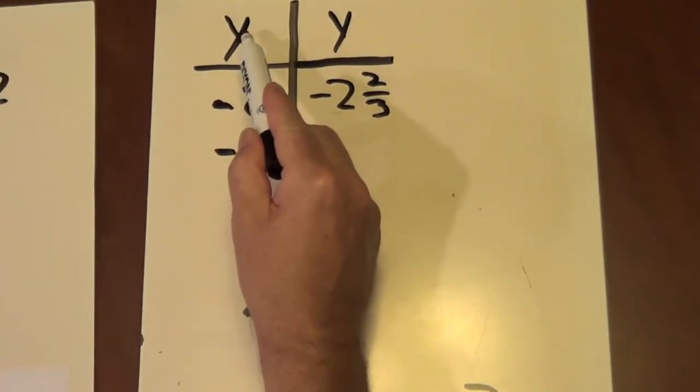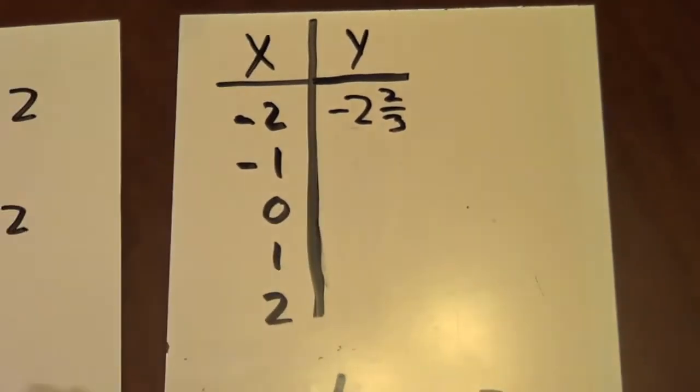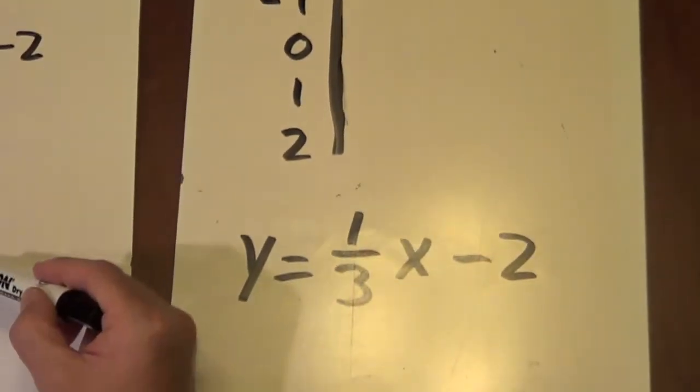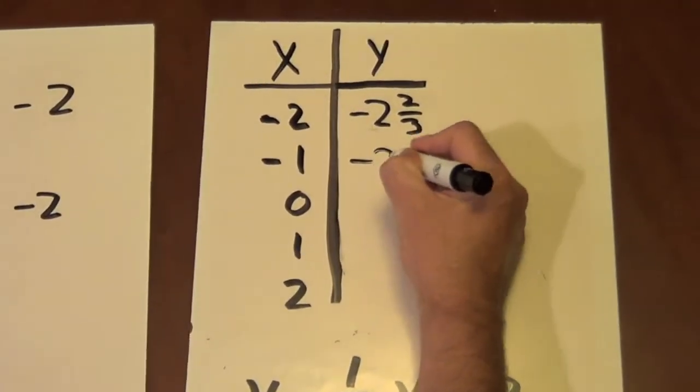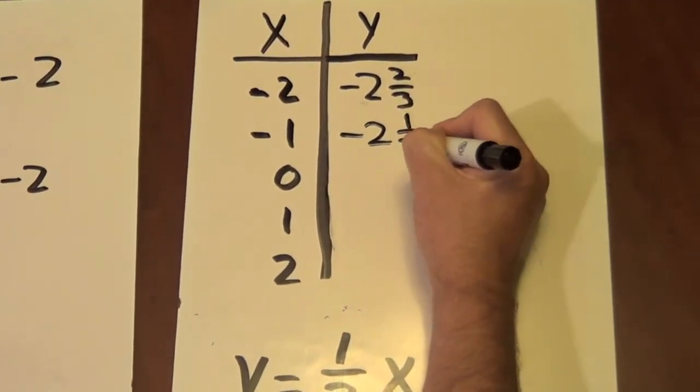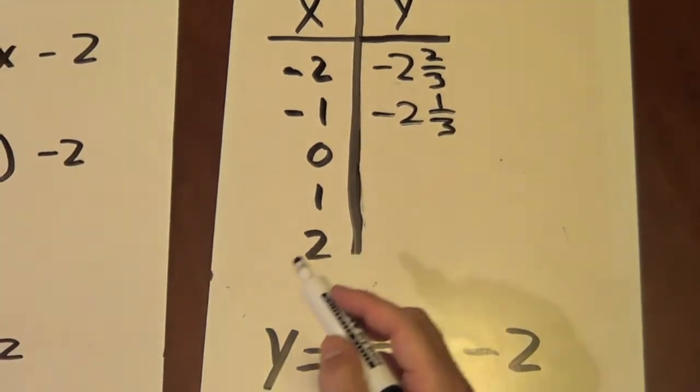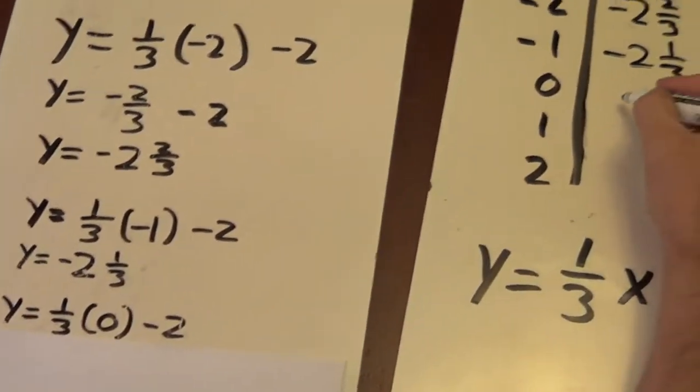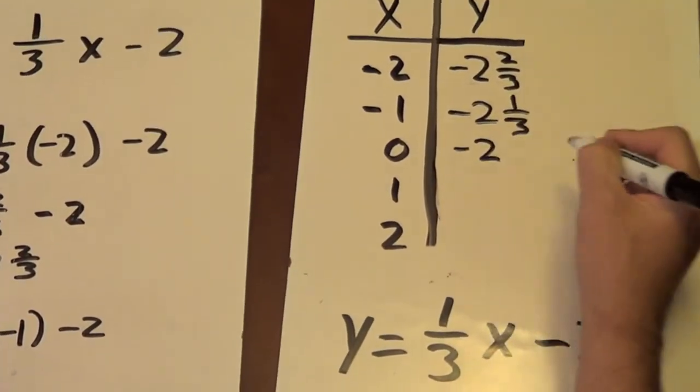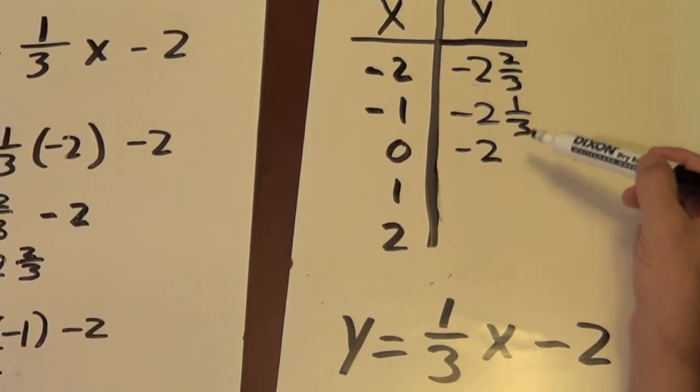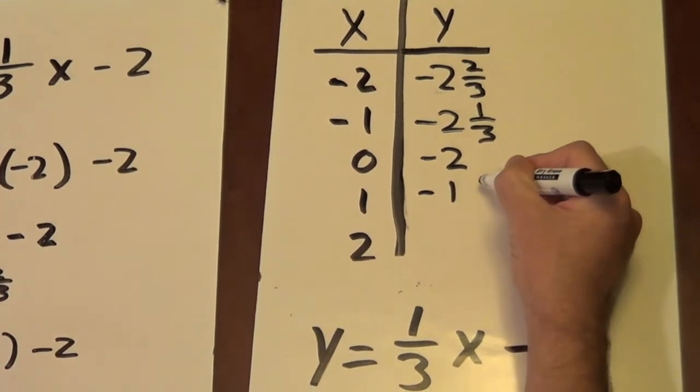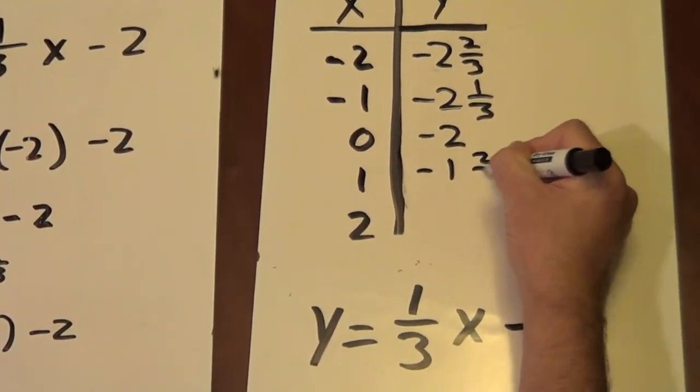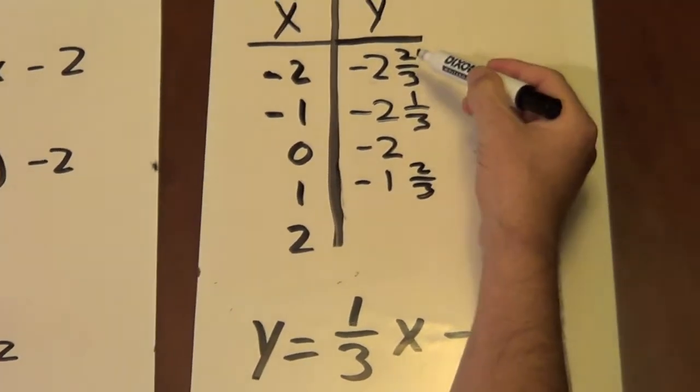Now, I'll substitute negative 1 for x. And when I substitute negative 1 for x, I get y equals negative 2 and 1 third. And when I put 0 in for x, I get y is negative 2. And you can see the pattern. The pattern is increasing. So my next will be negative 1 and 2 thirds. It's increasing by 1 third.